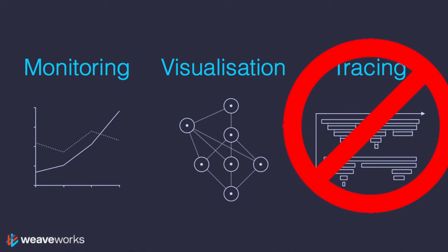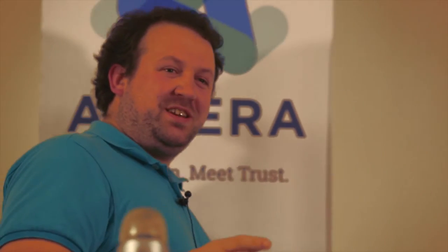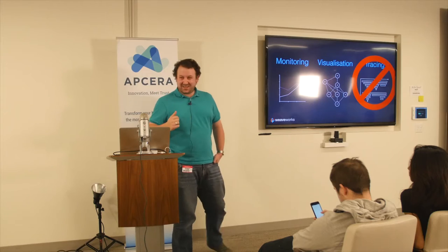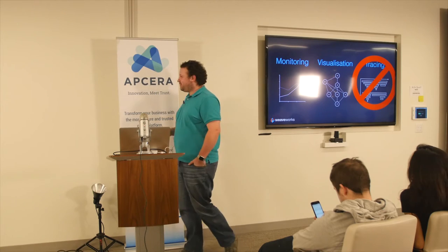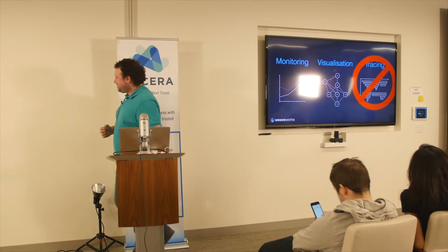I want to break monitoring down into three different topics. You might think, if the title's monitoring microservices, why am I talking about visualization and tracing, and why has tracing got this big red cross over it? Well, the big red cross is easy to explain — I've only got 20 minutes, and it's a 30-minute talk, so you just lock one topic off and you have a 20-minute talk.